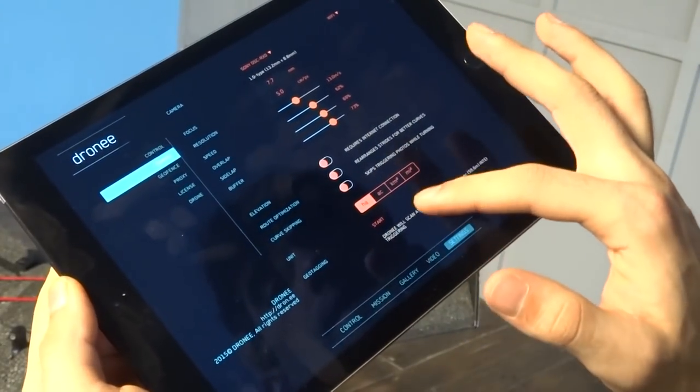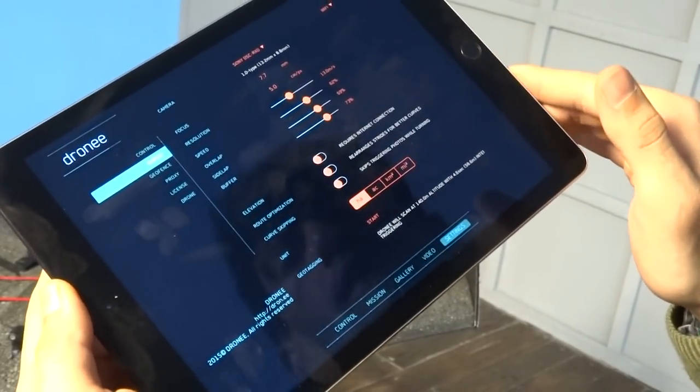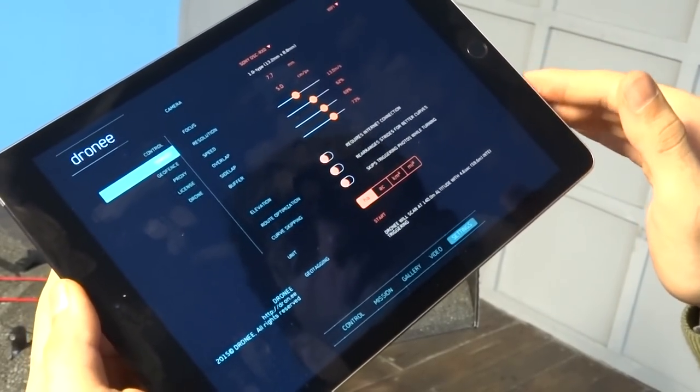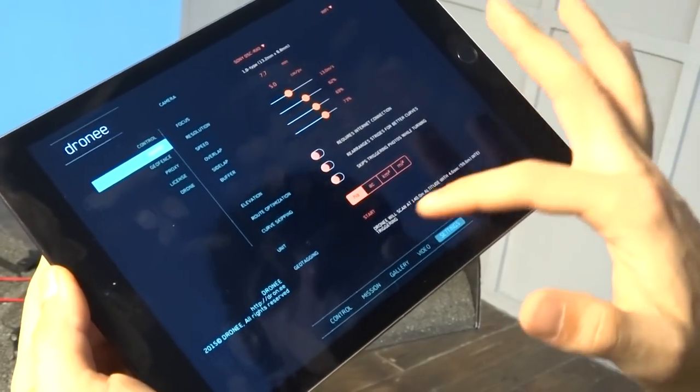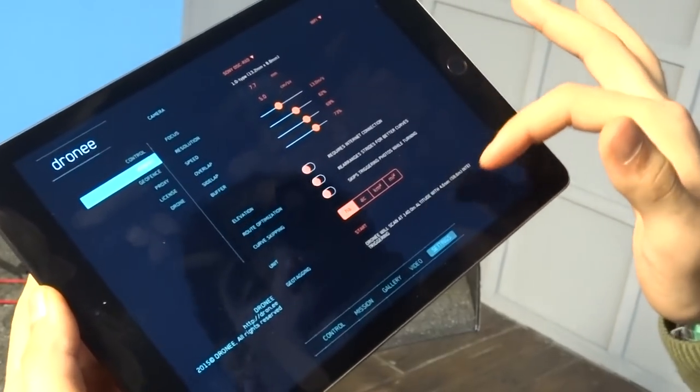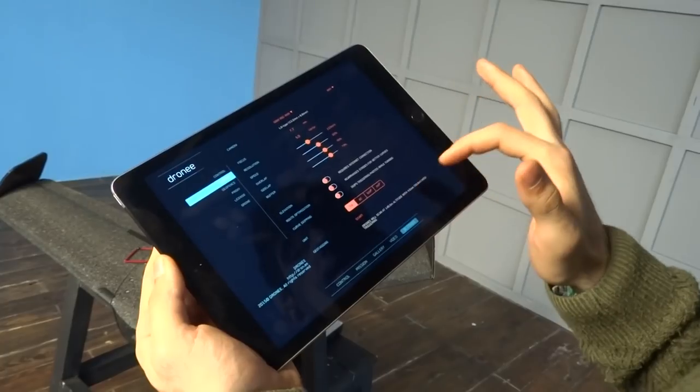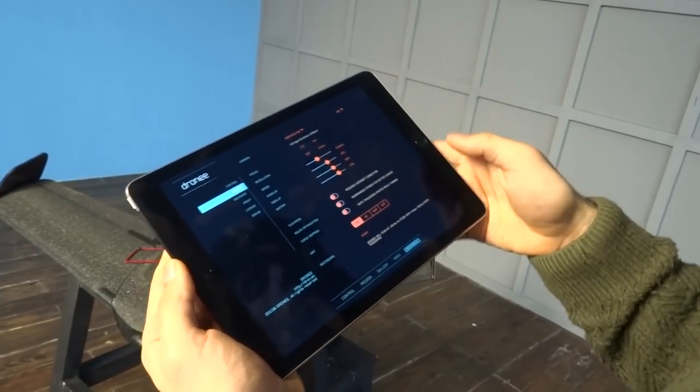For geotagging, you press the start button when the airplane lands, and it geotags the GPS data to the camera inside the SD card. On the bottom you can see it's written that the drone will scan at 140 meter altitude and will scan 4.6 meters every 6 seconds for these parameters.